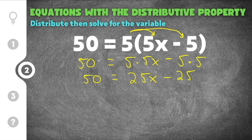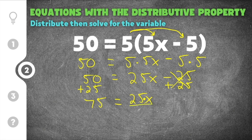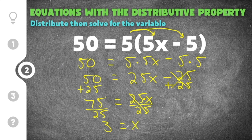The next step is to get the constants on one side and the variable on the other. The variable is on the right side, so minus 25 needs to move to the left. We cancel it by adding 25 to both sides. So 50 plus 25 is 75, giving us 75 equals 25x. Dividing both sides by 25: 75 divided by 25 is 3, so the solution is x equals 3.